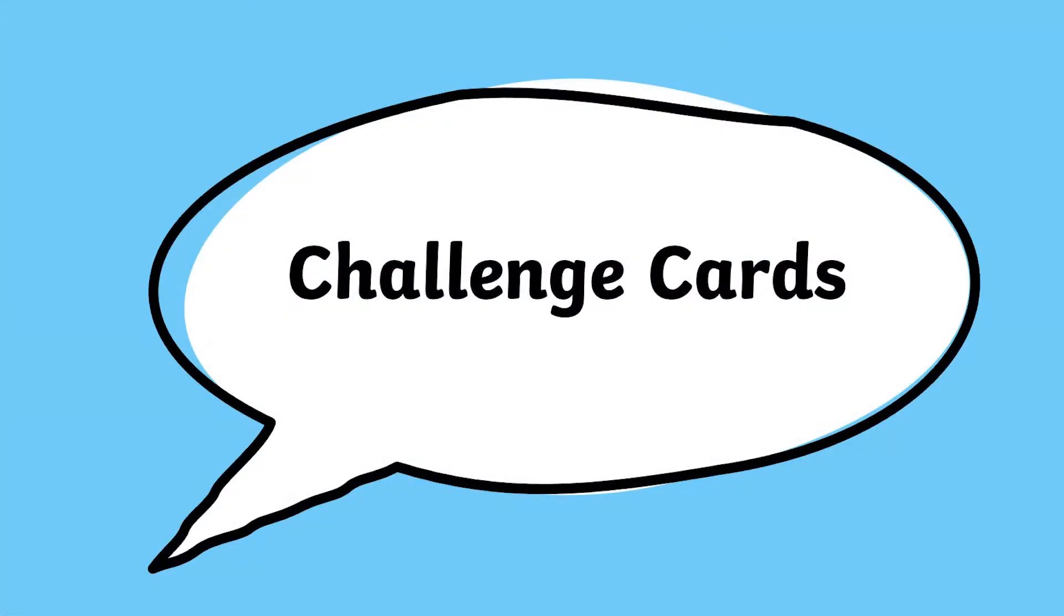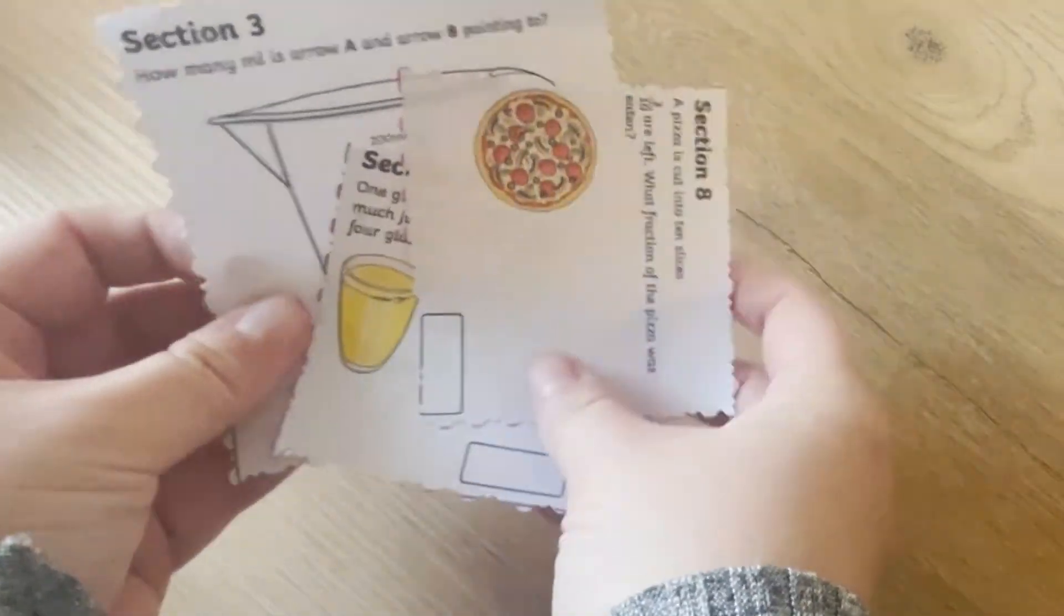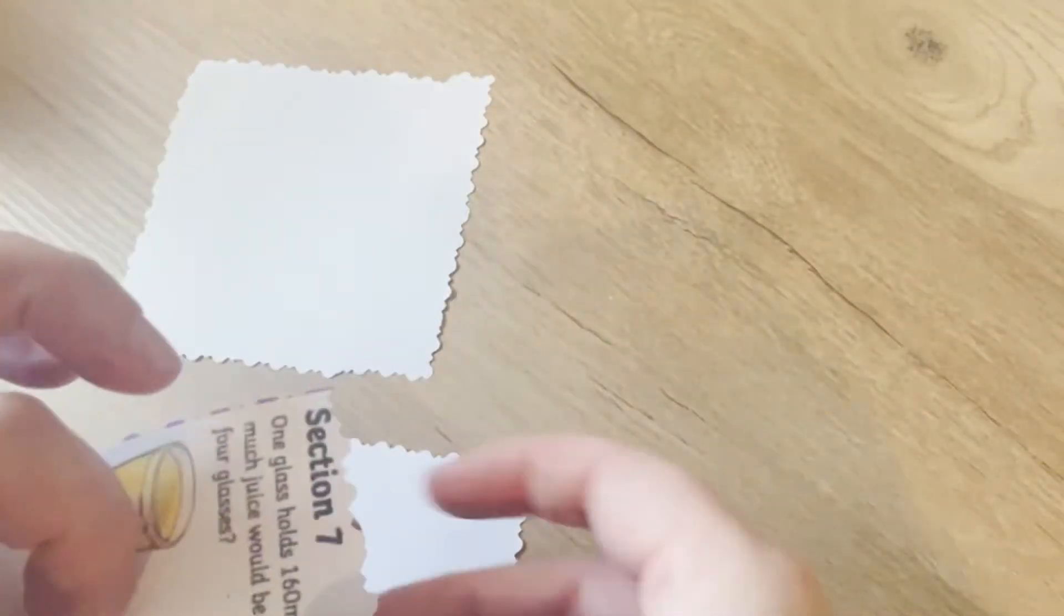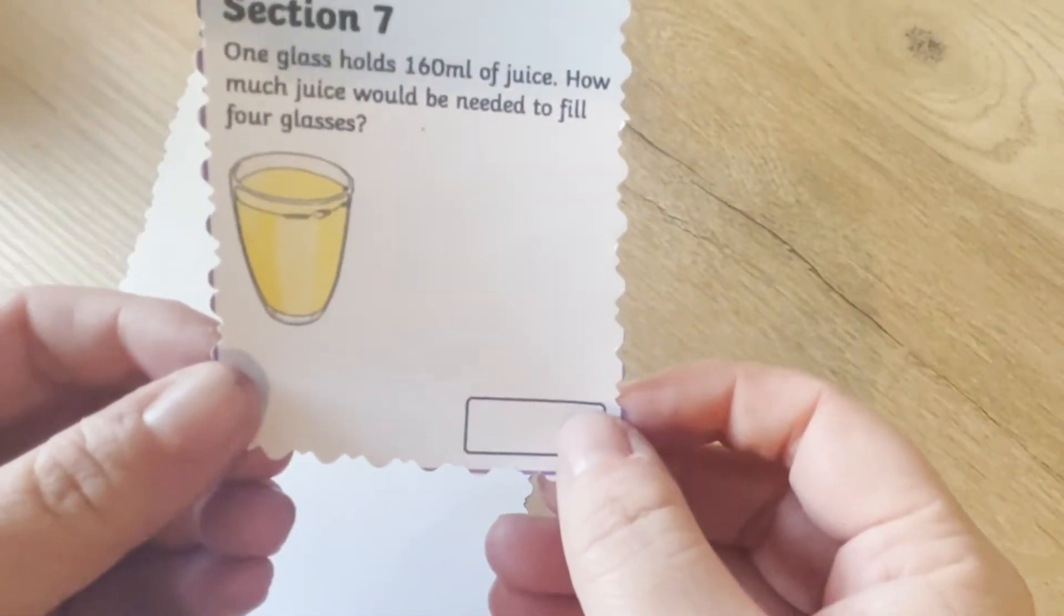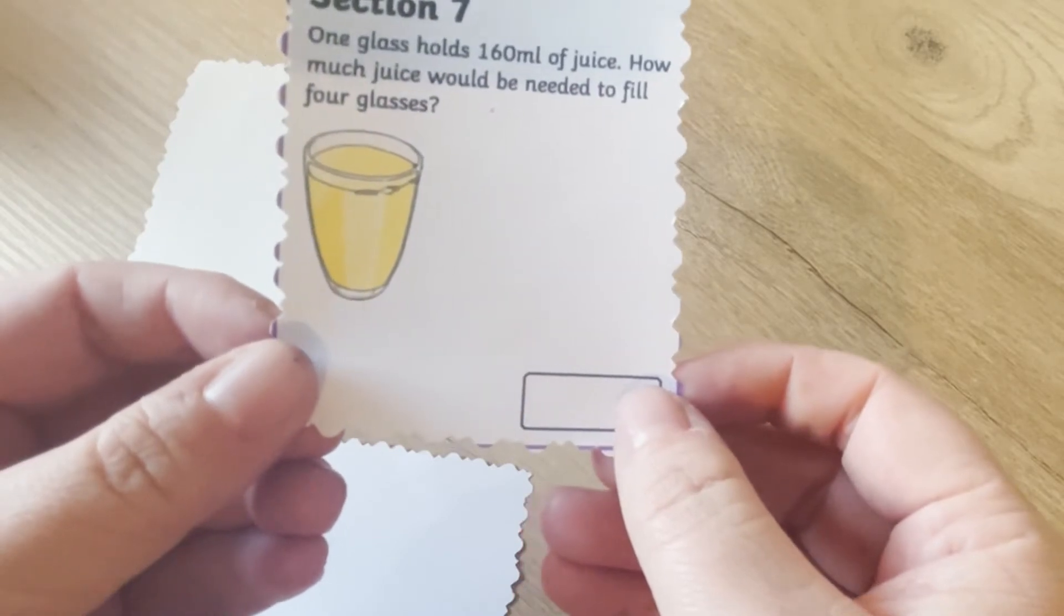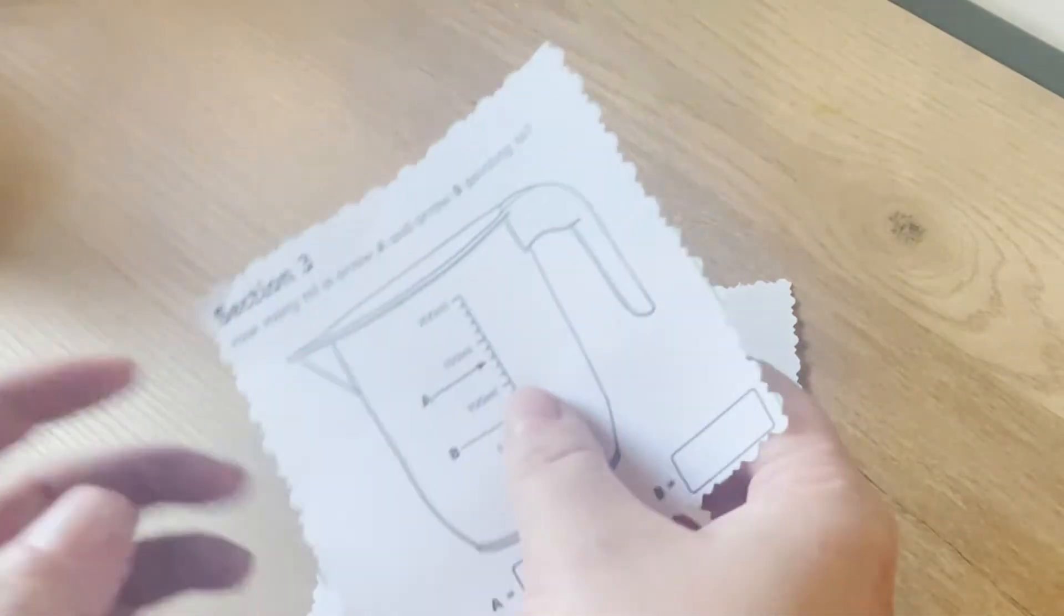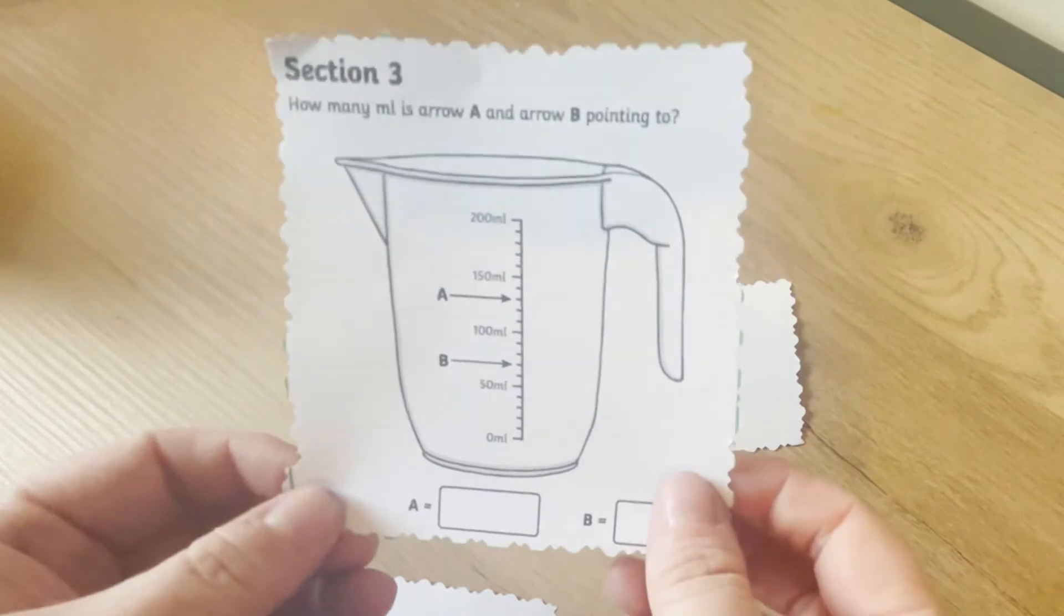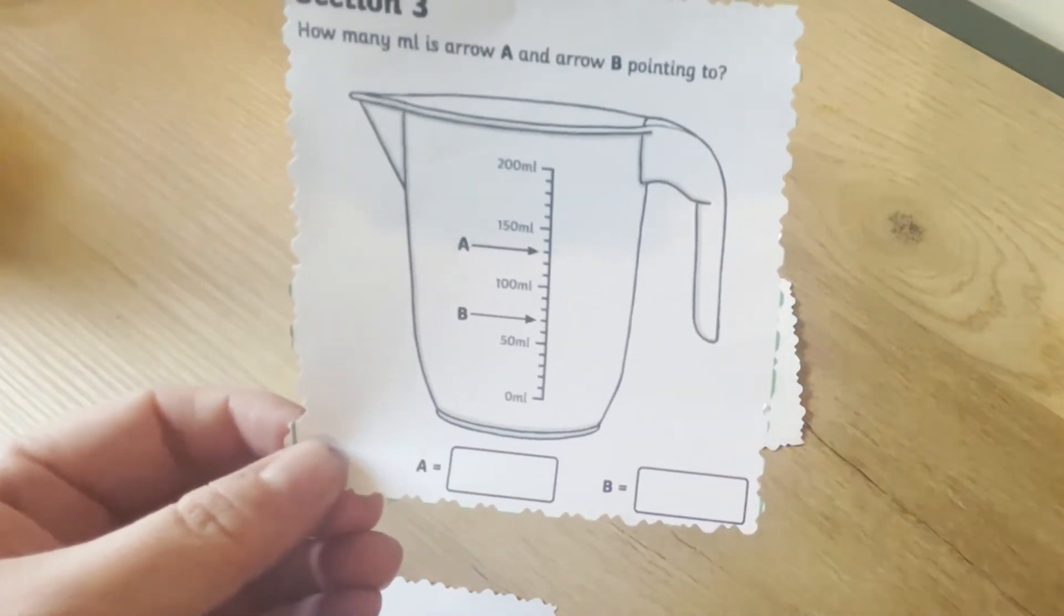So this part you might need some scissors. Cut up each section individually and use them as a challenge card swap. So the children will need a partner for this, or even an adult, and just swap the cards over. See if you can beat your partner at completing the question first, and if not, work together. It's always best.